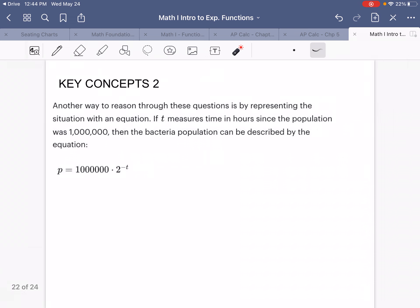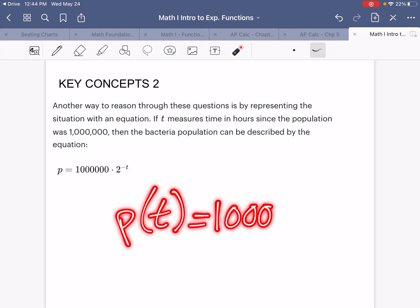But there is a better way to do it. Another way to reason through these questions is by representing the situation with an equation. If T measures time in hours since the population was 1,000,000, then the bacteria population can be described by the equation of this. We could write it like that, or you know what's even better? However, we could just stick with our standard equation that we already know.